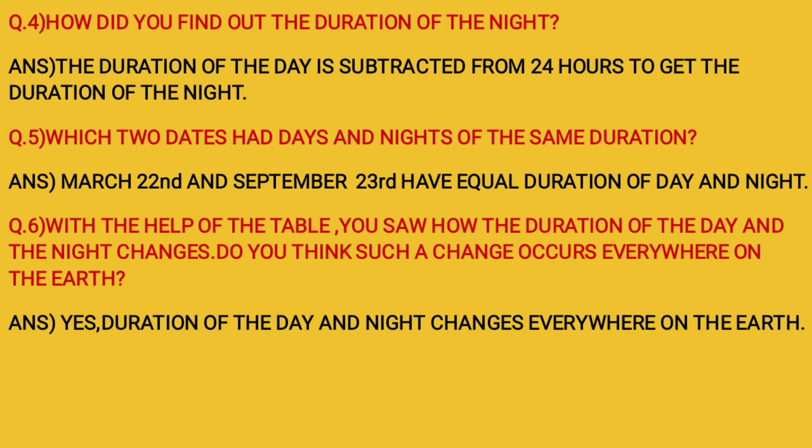Question: How did you find out the duration of the night? Answer: The duration of the day is subtracted from 24 hours to get the duration of the night.